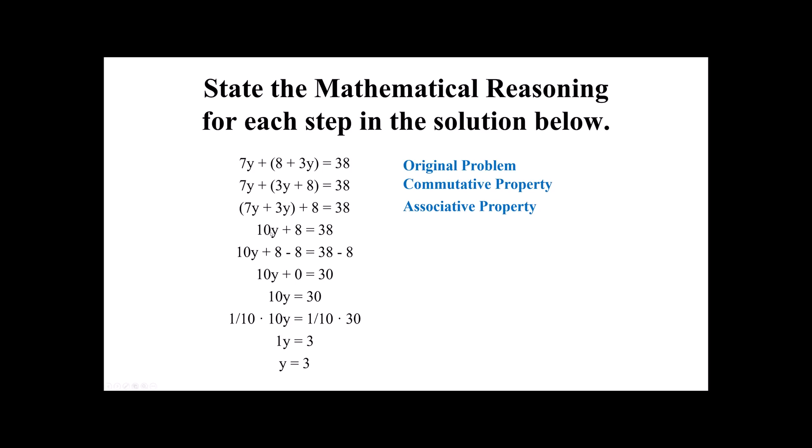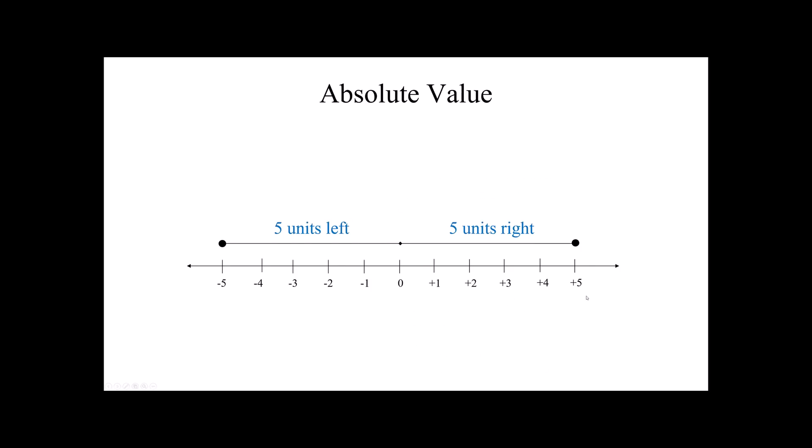The next step, I took 7y and 3y, combined that to make 10y. A lot of people call that combining like terms, but the justification for that is the distributive property. We now have that familiar two-step equation form. Property of equality to get rid of the plus 8, do a little computation, the additive identity leaving me with 10y equals 30. To get rid of a times 10, I multiply by the multiplicative inverse or the reciprocal, property of equality. Then I used multiplication and the multiplicative identity.